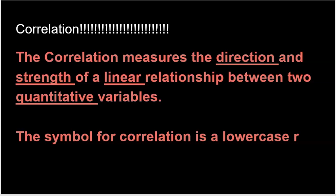Correlation has a very specific definition. Correlation measures the direction and strength of a linear relationship between two quantitative variables. The symbol we use for correlation is simply a lowercase r, and sometimes you'll see it referred to as the correlation coefficient. A coefficient is a value that helps us do something — that's why it's called the correlation coefficient. We use the letter r, maybe because there are two r's in correlation.